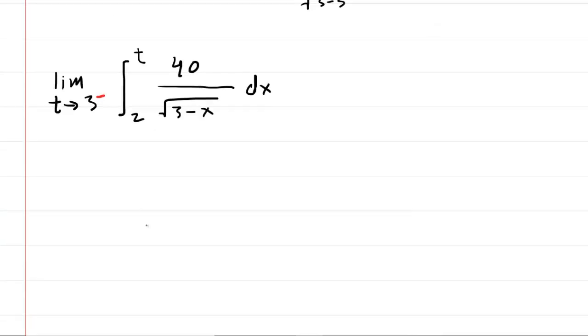Now what we next typically do is try to evaluate the integral without the bounds and then later put the bounds back on. So basically you're going to be taking somewhat of an aside here, and with this aside you're going to be trying to integrate. So you have 40 over, let's rewrite the square root of 3 minus x as 3 minus x raised to the power of 1 half. It's going to make the integration a little bit easier.